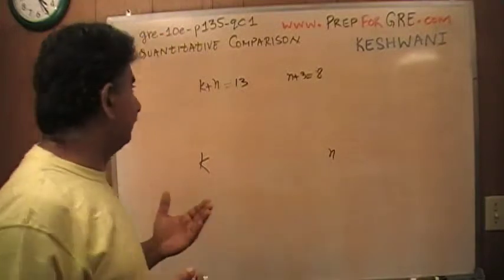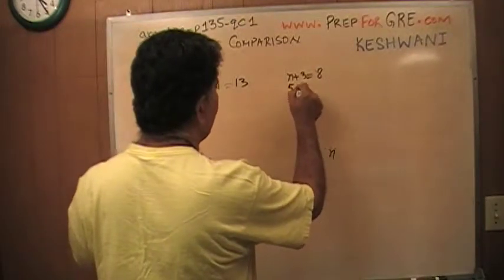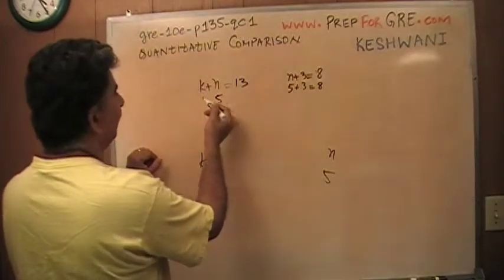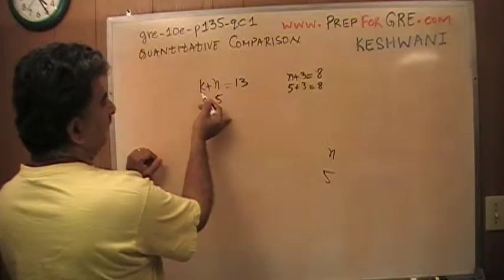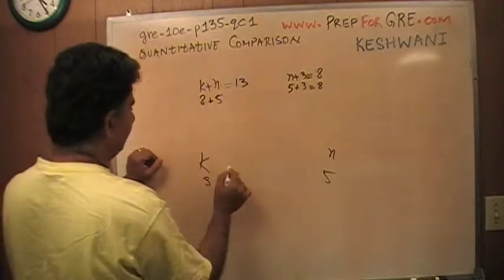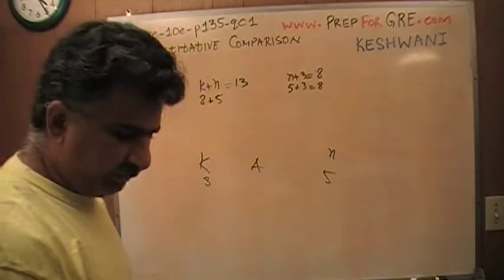As I said, it's very simple. If N plus 3 is 8, N must be 5. And if N is 5, K has to be some number plus 5 equals 13. K has to be 8. 8 plus 5 is going to be 13. There we go, answer is 8. That's it, we are done. It's very simple. Let's look at number 2.